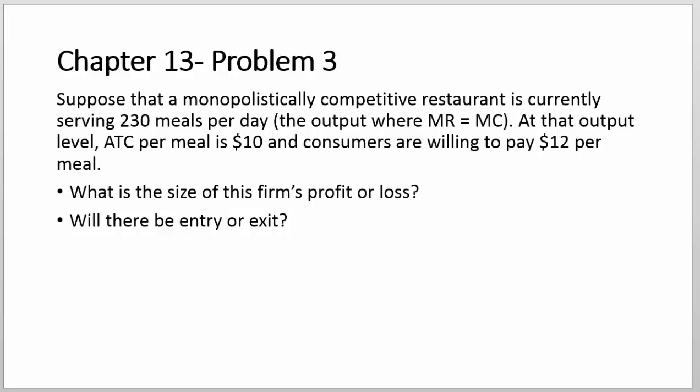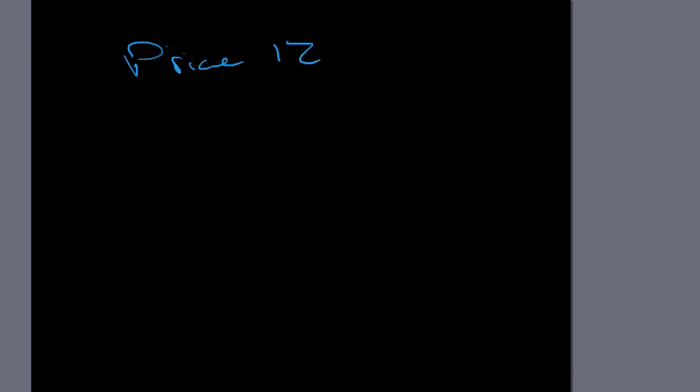So the profit or loss for each meal — let's figure that out first. Our price is $12 and our average total cost, which is basically the cost per meal, is $10. That leaves us $2 of profit. So this is economic profit per meal.